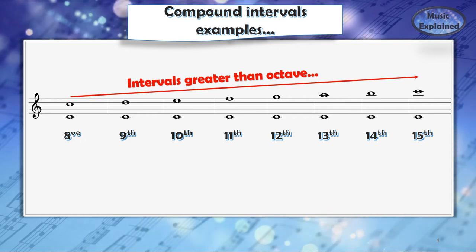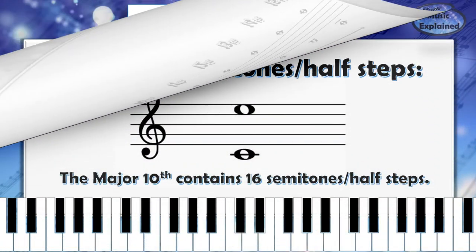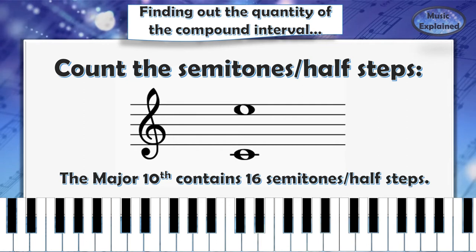Finding out the quantity of the compound interval: First, we can count the semitones or half steps. For example, C and E. So let's find this out on the piano keyboard.